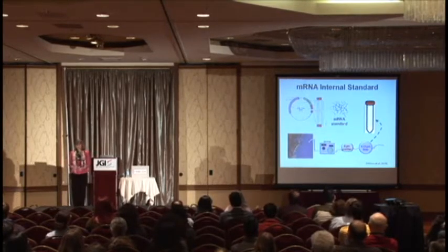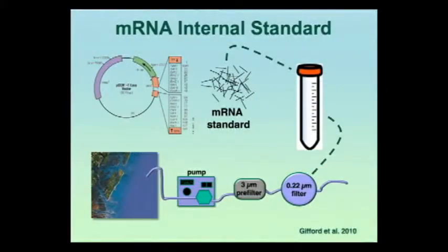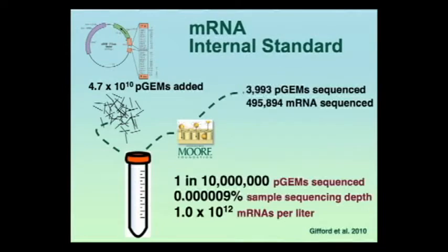One way to do that is to add an internal standard. This is work by Scott Gifford, a PhD student in my lab. We make an artificial message using in vitro transcription from a commercial cloning vector — we call them p-gems — so we can make as many as we want, all the exact same size and sequence. Scott collected a sample off the southeastern U.S. coast, flash-froze the filter, and then added a known number of these p-gems — 4.7 times 10 to the 10th — at the start of processing. At the end, he found about 3,993 of those in the library, meaning we sequenced one in every 10 million standards added.